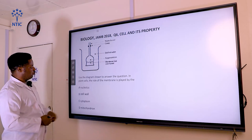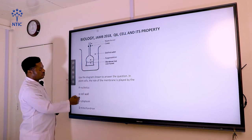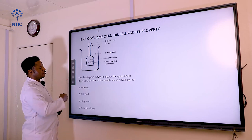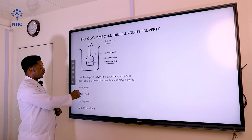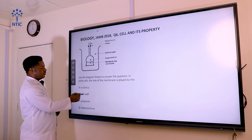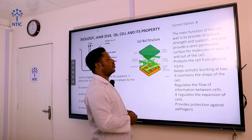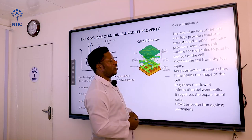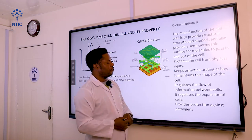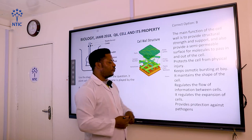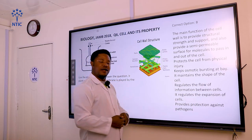We are still using the same experiment. In plant cells, the role of the cell membrane is played by the cell wall. The cell membrane is found in both plant and animal cells, but in plants it is embedded by another layer known as the cell wall. The main functions of the cell wall are: to provide structural strength and support, to provide a semi-permeable surface for molecules to pass in and out of the cell, to protect the cell from physical injury, to prevent osmotic bursting, to maintain the shape of the cell, to regulate the flow of information between cells, to regulate the expansion of the cell, and to provide protection against pathogens.